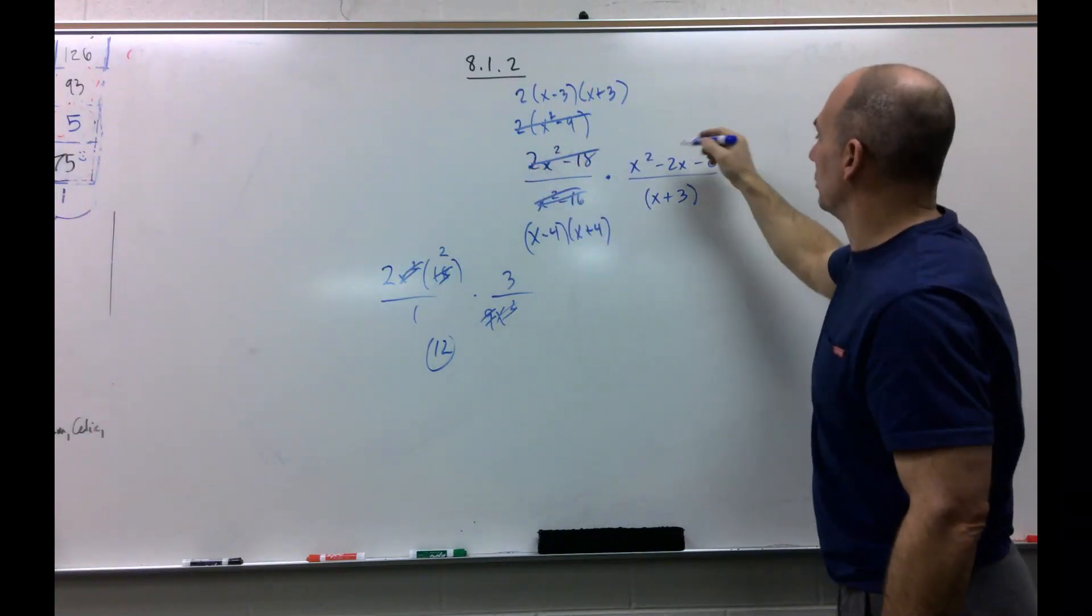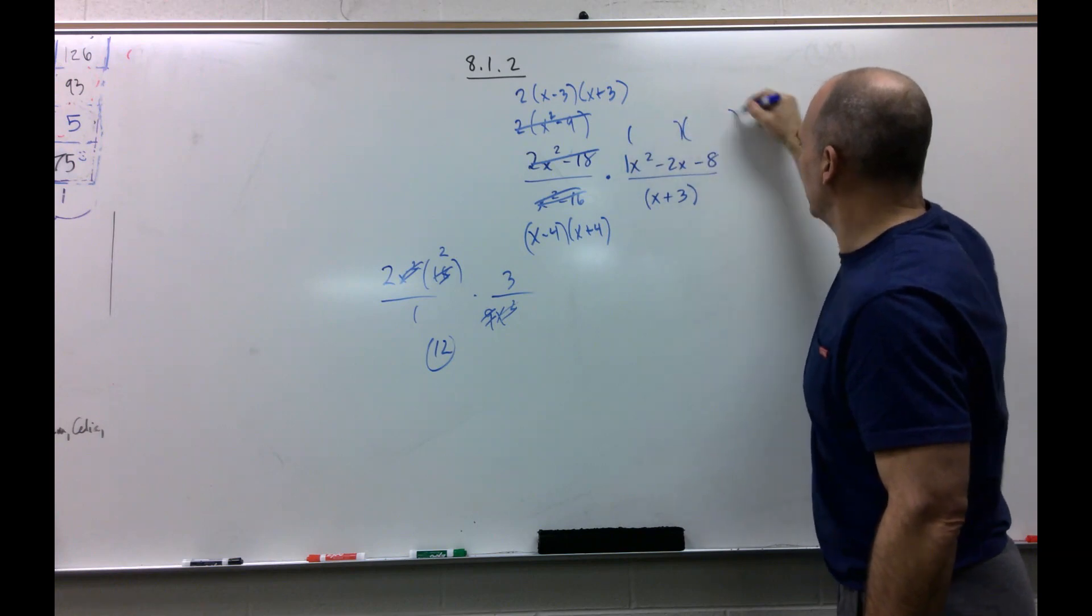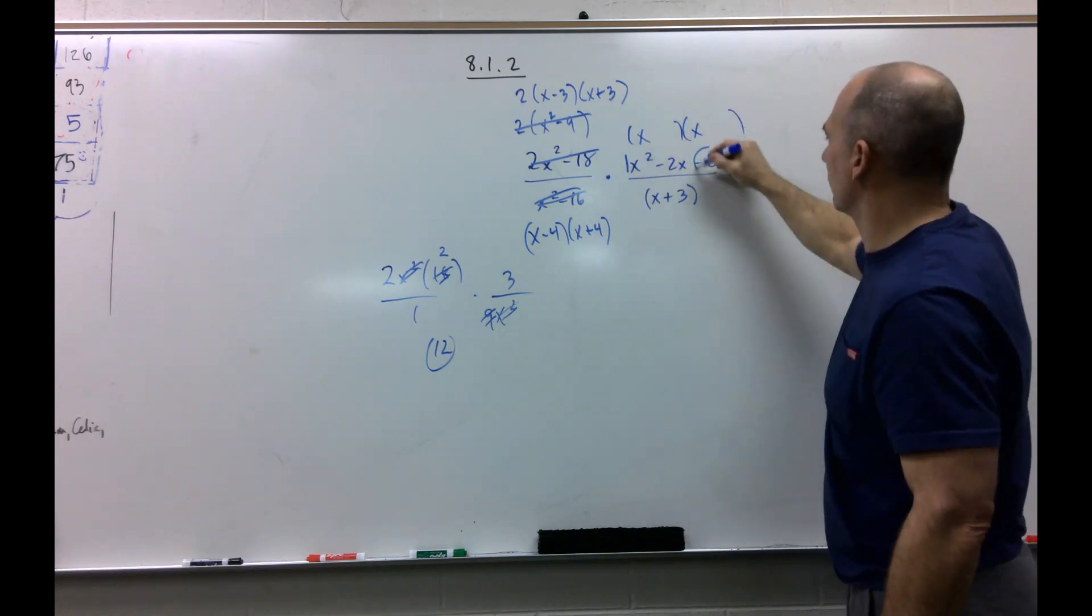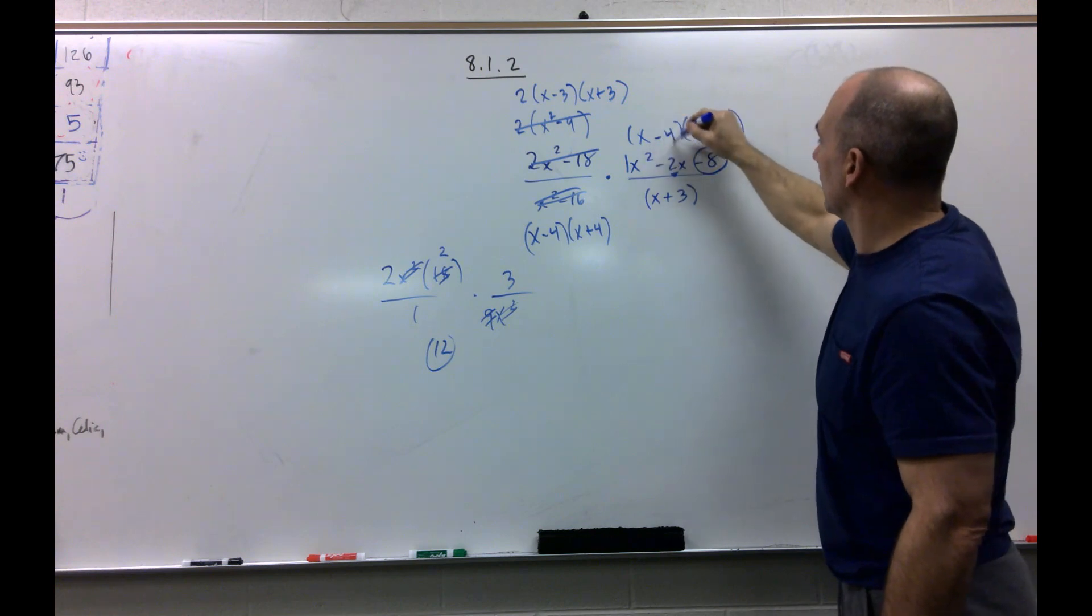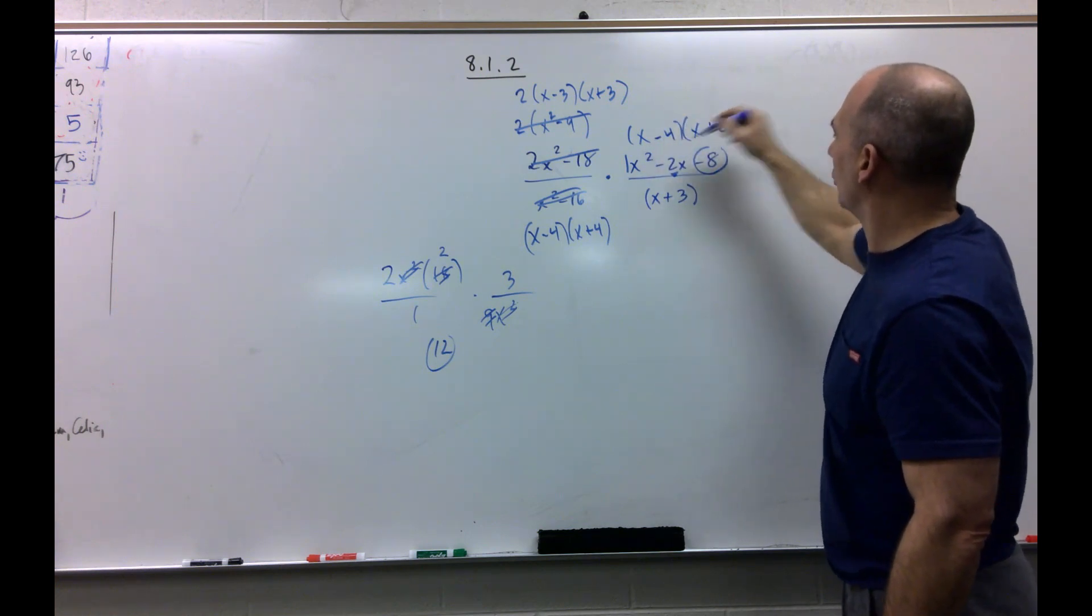I have a trinomial here that's got a 1 there. That makes my life nice. So x, x, two factors of negative 8 that add up to negative 2: negative 4 and plus 2. So I'm not worried about that.